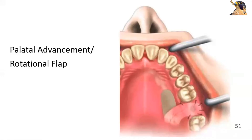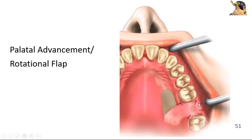The palatal rotational flap, or palatal advancement flap, has an advantage in edentulous patients as we discussed earlier, so that the vestibular depth is maintained. The resultant mucoperosteal flap is rotated posteriorly and palatally. This type of flap is placed over the orifice of the socket.